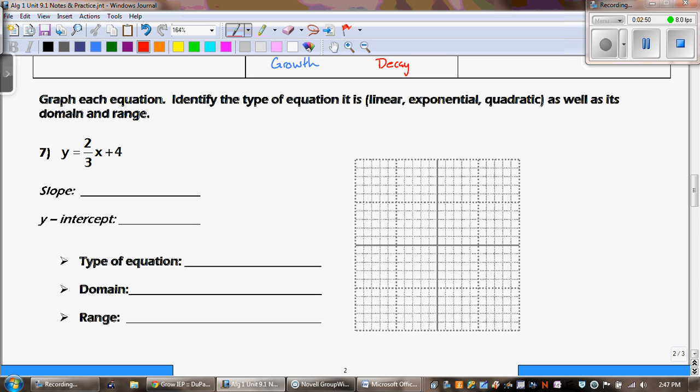So looking at number seven, what is the slope? Remember, y equals mx plus b. So our slope is two over three. And that means up two, right three. Our y-intercept was this part in the back, and that's zero, four.